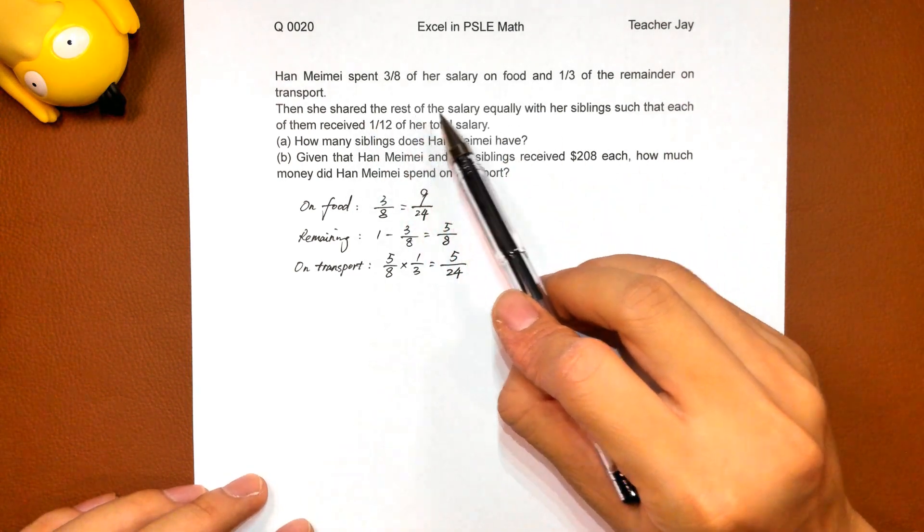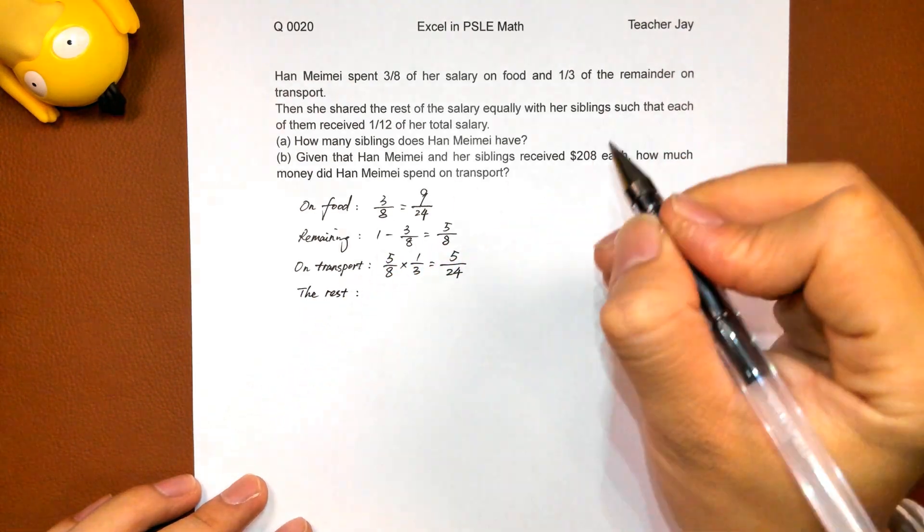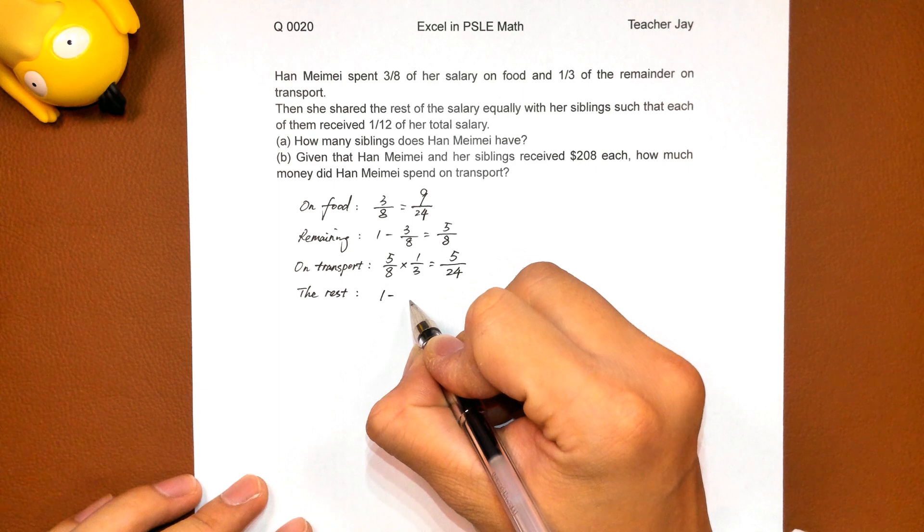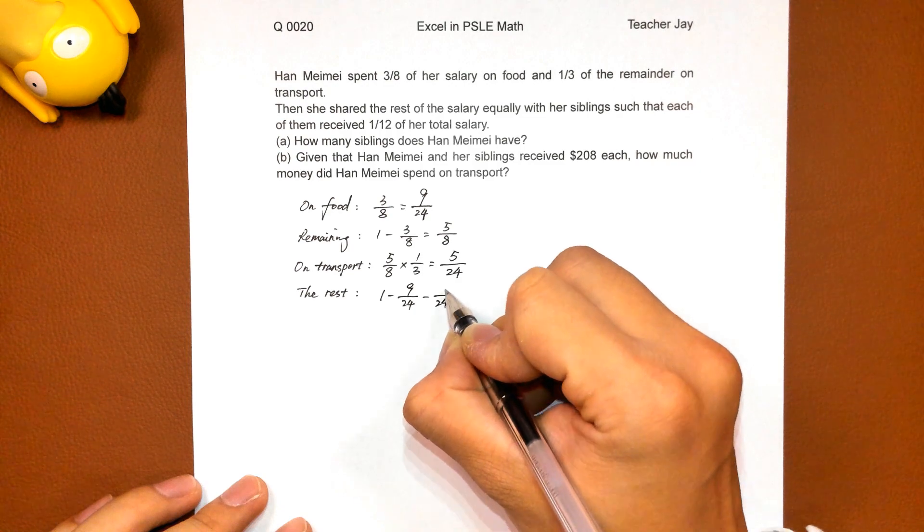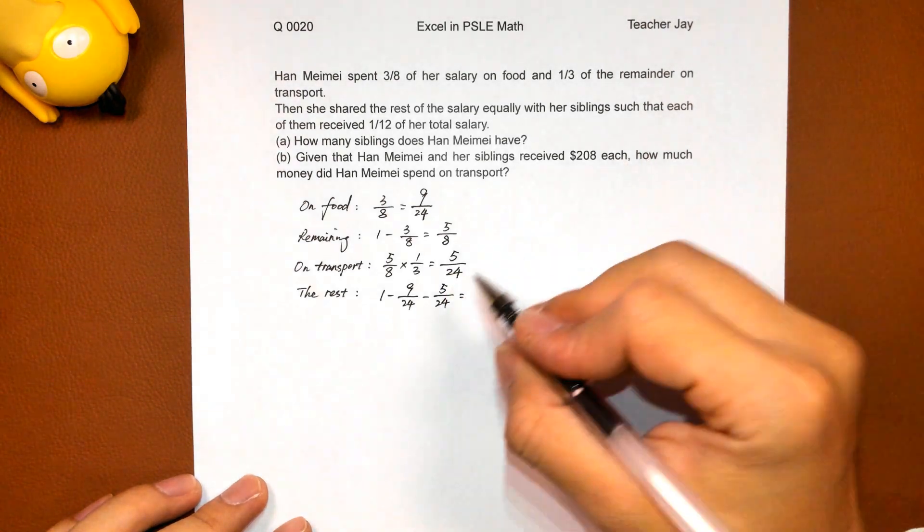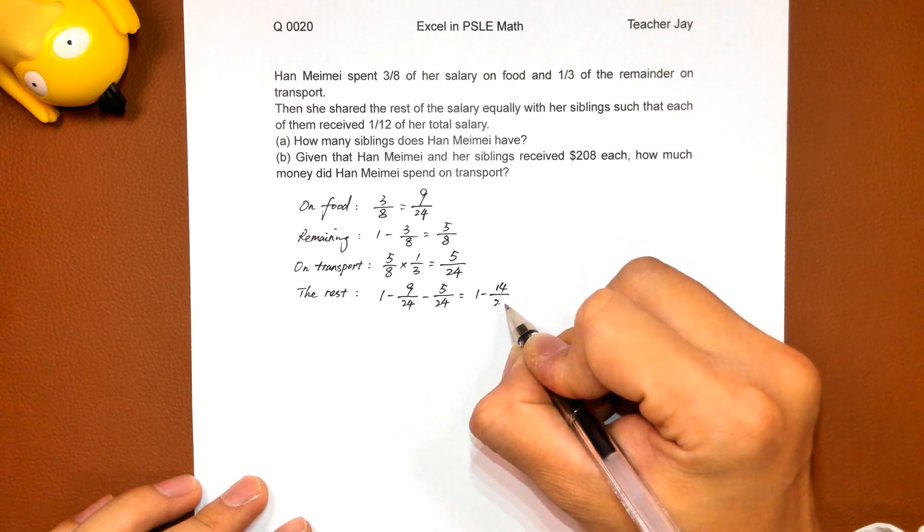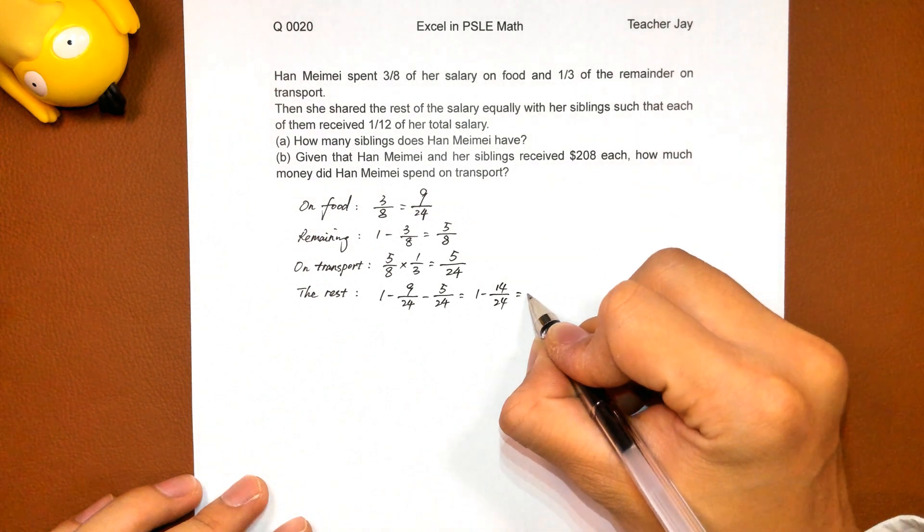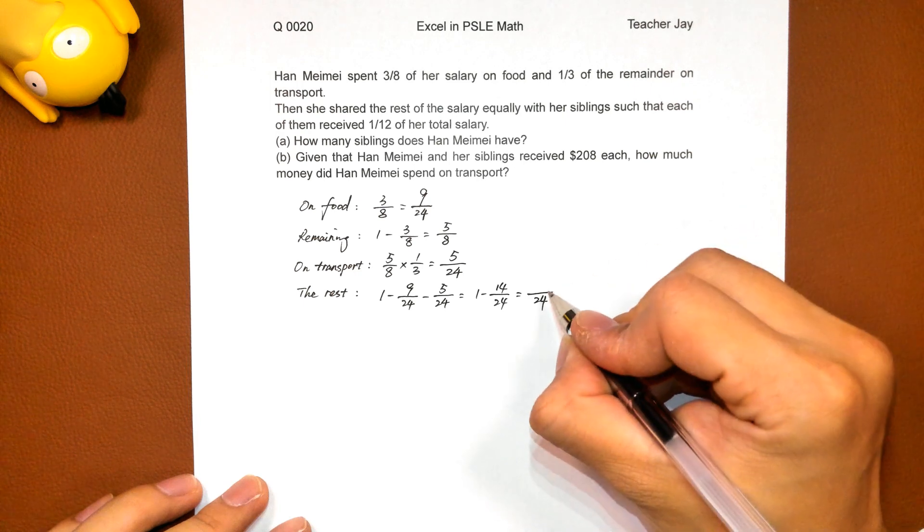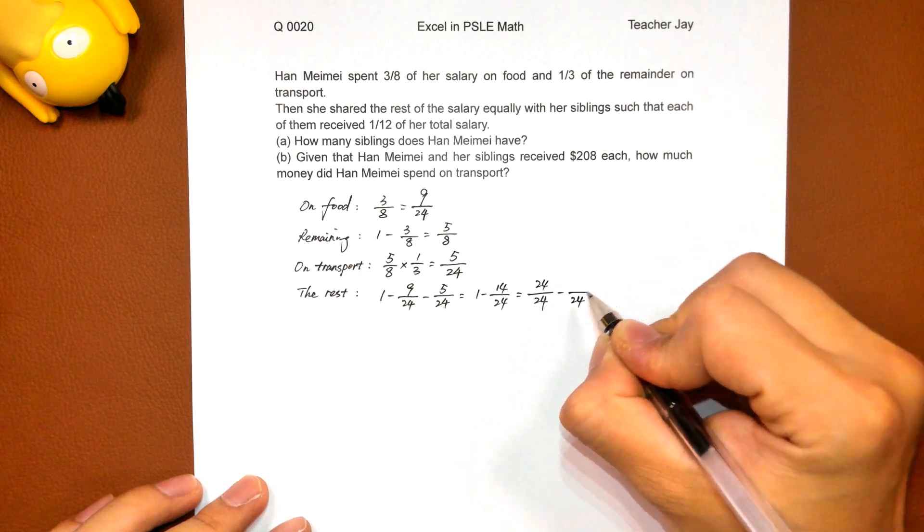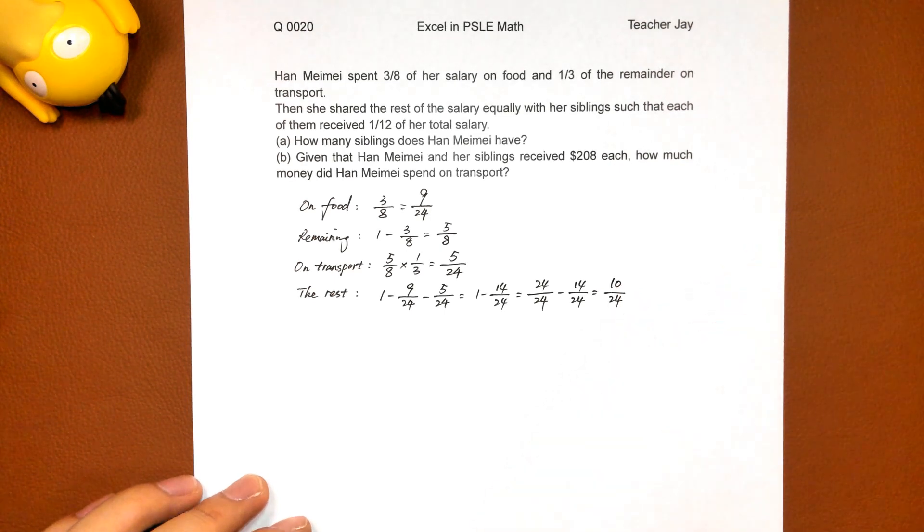Then she shared the rest of the salary. The rest of her salary. One whole minus nine over 24 minus the amount spent on transport, which is five over 24. One minus fourteen over 24 equals ten over 24.